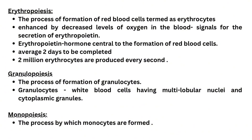The process of formation of red blood cells, termed erythrocytes, is known as erythropoiesis. It is enhanced by decreased levels of oxygen in the blood, which signals for the secretion of erythropoietin — the hormone central to the formation of red blood cells. It takes on average 2 days to form a mature red blood cell from a unipotential hematopoietic cell, and 2 million erythrocytes are produced every second in our body.